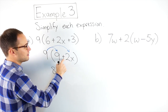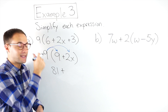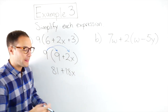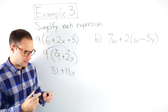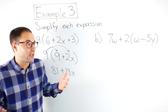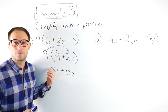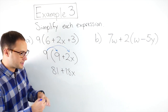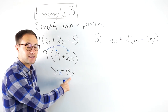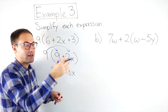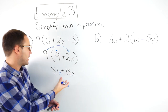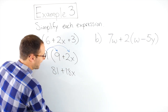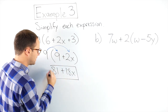9 times 9 gives me 81, bring down the operation, and 9 times 2x is 18x. I can't simplify any further because 81 and 18x are not like terms — I don't know what x is. Like terms are terms that are alike and can be combined. All plain numbers are like terms with each other, but variables must match. For example, 81x plus 18x would give 99x. But since this is just 81, I can't combine them. So my final answer is 81 plus 18x.